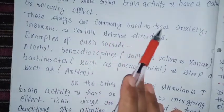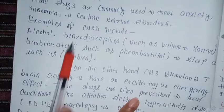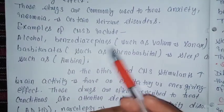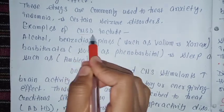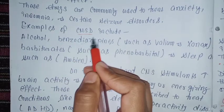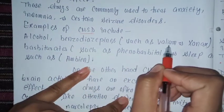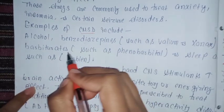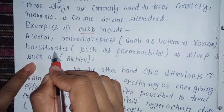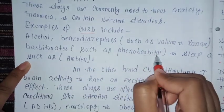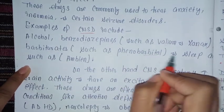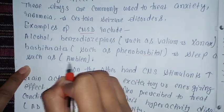These drugs are commonly used to treat anxiety. We have also examples of CNS Depressants: Alcohol, Benzodiazepines (such as Valium, Xanax), Barbiturates, Phenobarbital, and sleep medications like Ambien.